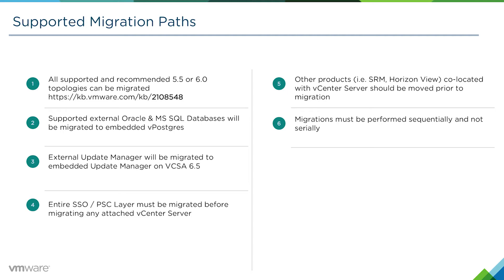Other products like SRM or Horizon View, if they're co-located with the vCenter Server, should be moved prior to migration as that machine will be shut down. Migrations should be performed sequentially and not in parallel — do one at a time and not all at the same time.